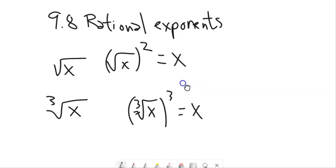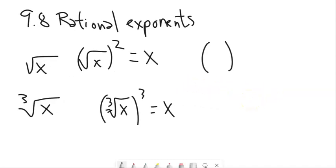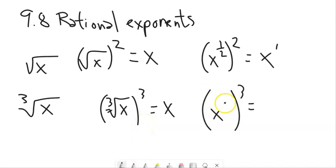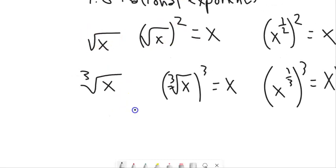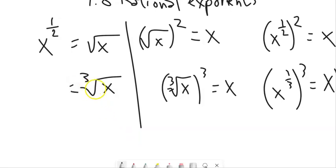Let's tie this back to taking a power to a power. If I have x to some power, and squaring it gives me x, then that power times 2 equals 1 — so the power is 1/2. Similarly, x to some power cubed gives x, so that power is 1/3. These radicals with different indices are the same as 1/2 and 1/3 powers respectively.